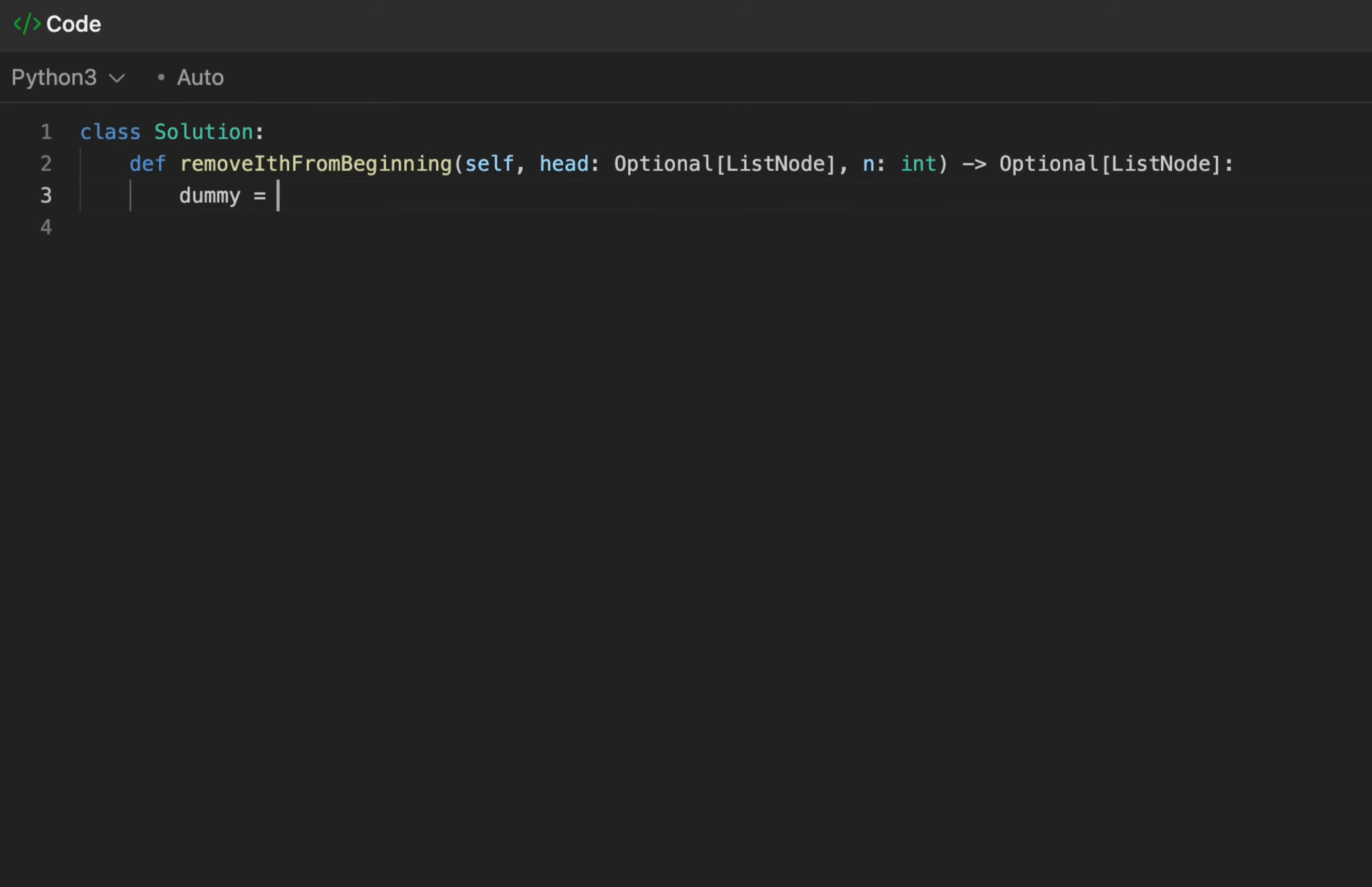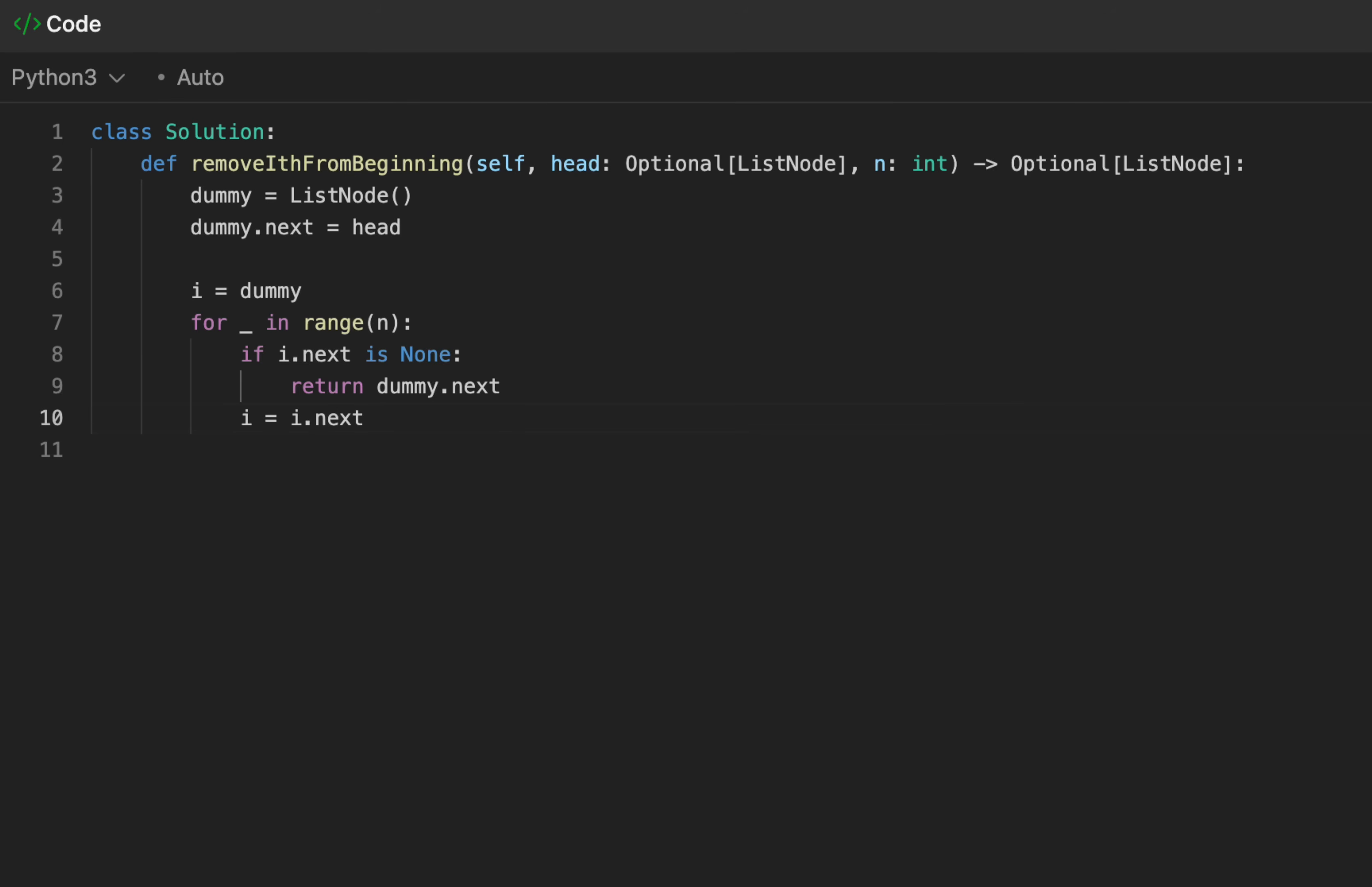First things first, let's initialize our dummy node, and set it to our head node. This is exactly how we set it up in the OG problem. We'll assign i to dummy, and run a for loop for n times. Recall an edge case. If our n was, say, 9000, but we had like 10 nodes, then we should check for this. If i next is none, or null pointer, then we'll return dummy next as instructed, and then we'll call it a day. Otherwise, we'll keep progressing our i pointer as normal.